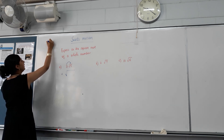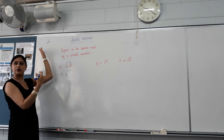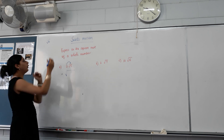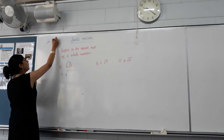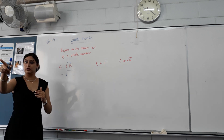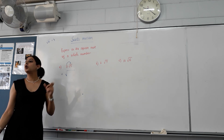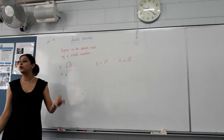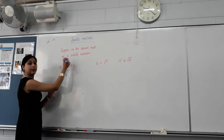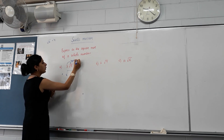For example, root 16. If you wanted to take root 16 out of the root sign, you square root it — the square root of 16 is 4. So what's the opposite of square rooting? Squaring. So now we don't square root it, we square it. Once you move a number inside, what do we do? Square it.